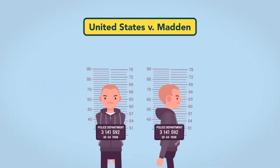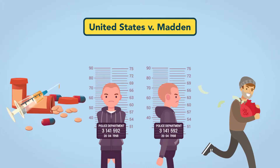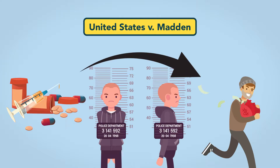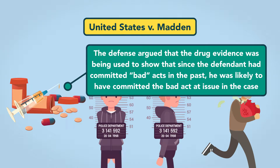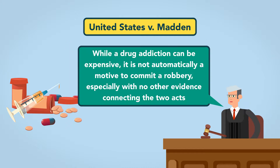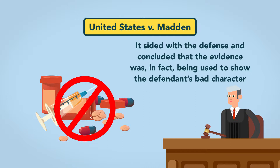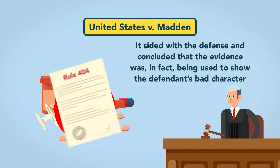In United States v. Madden, Madden was charged with committing bank robbery. The prosecution sought to introduce evidence of Madden's prior drug use and addiction to show that the defendant had a motive to rob the bank and that his drug problem was expensive to maintain. The defense argued that the drug evidence was being used to show that because the defendant had committed bad acts in the past, he was likely to commit the bad act at issue in the case. The court noted that while drug addiction can be expensive, it is not automatically a motive to commit a robbery, especially with no other evidence connecting the two acts. So it sided with the defense and concluded that the evidence was, in fact, being used to show the defendant's bad character and so was inadmissible under Rule 404.